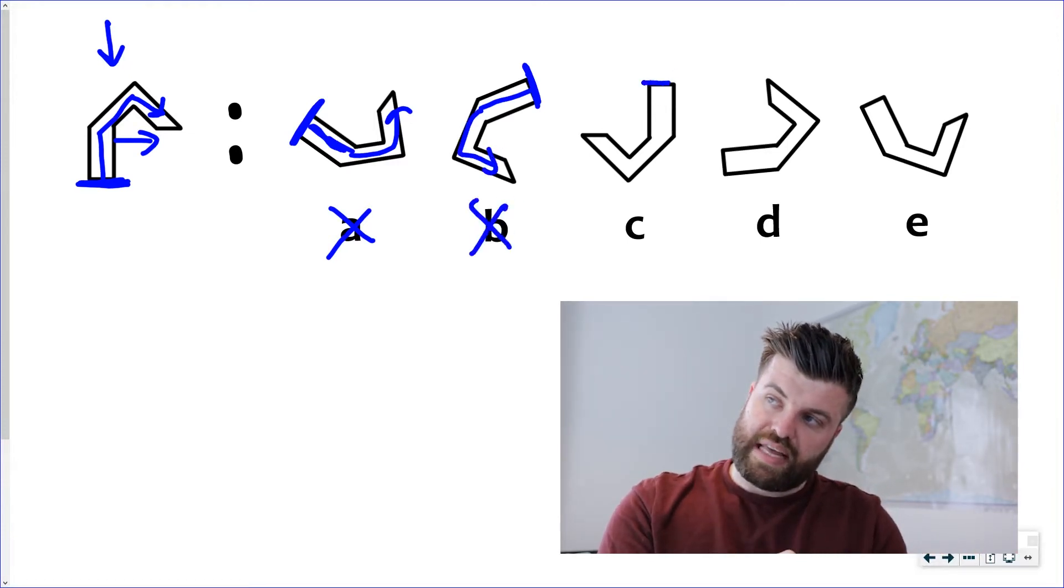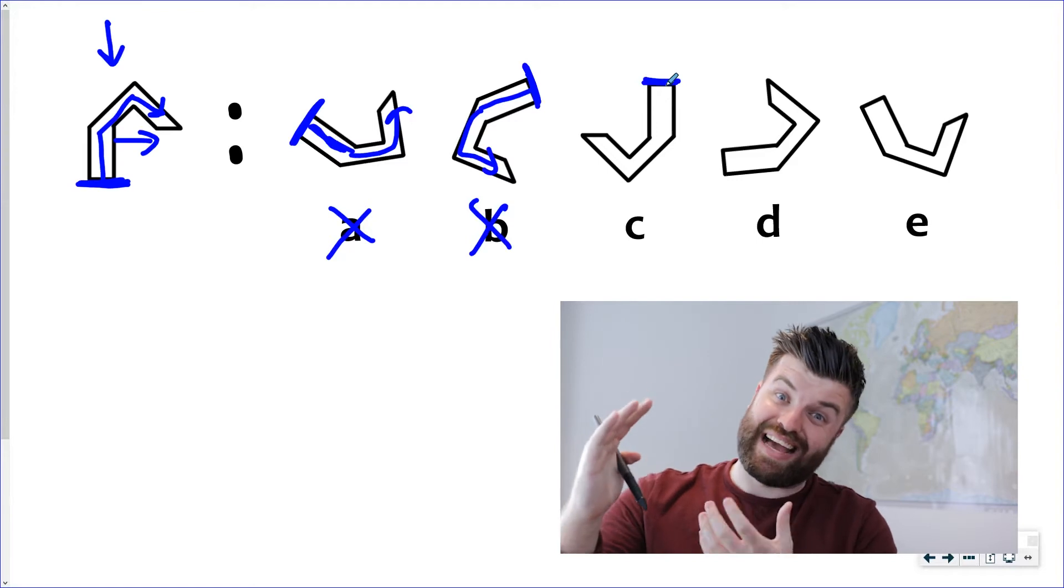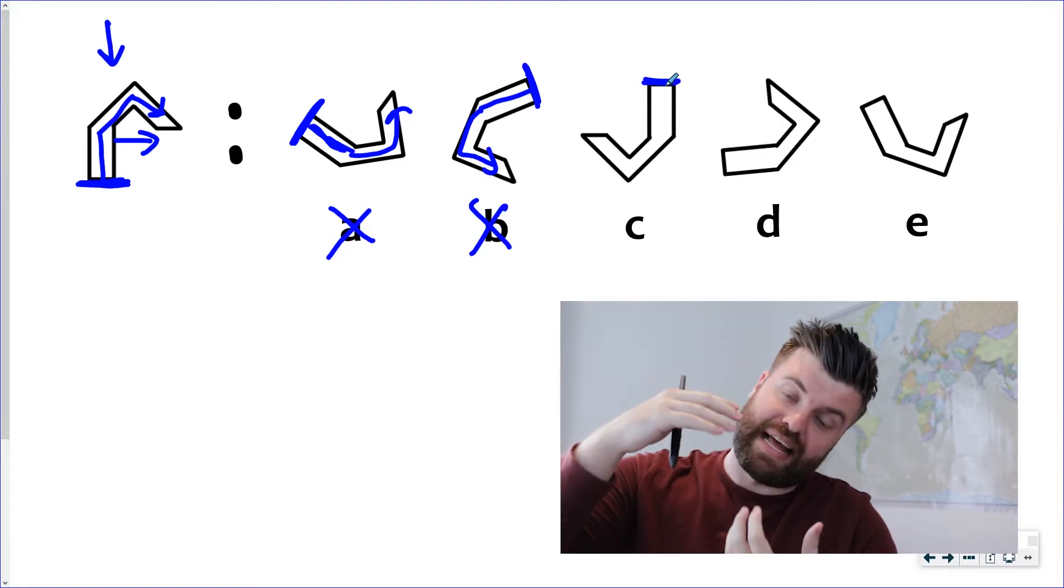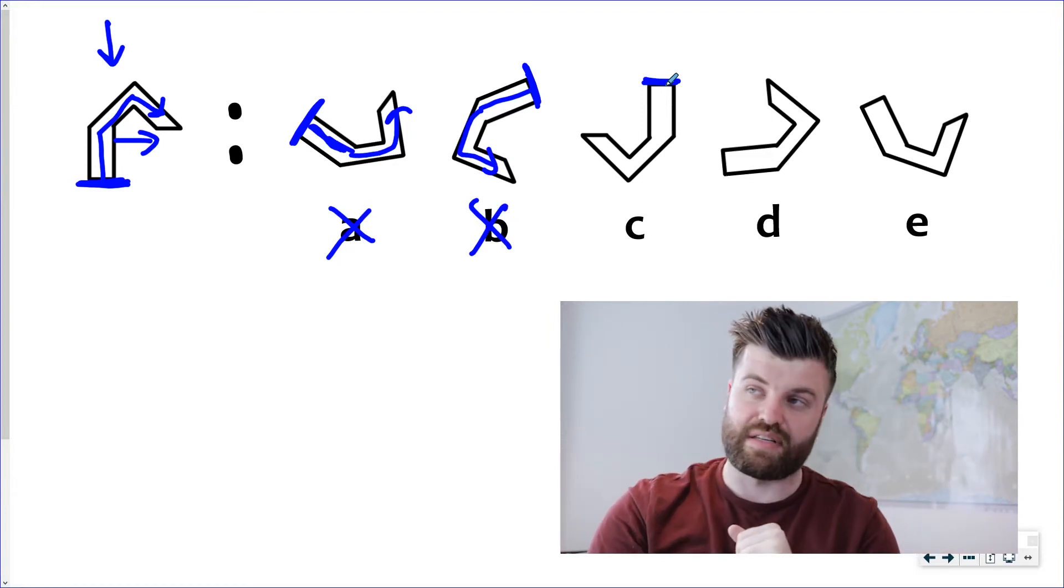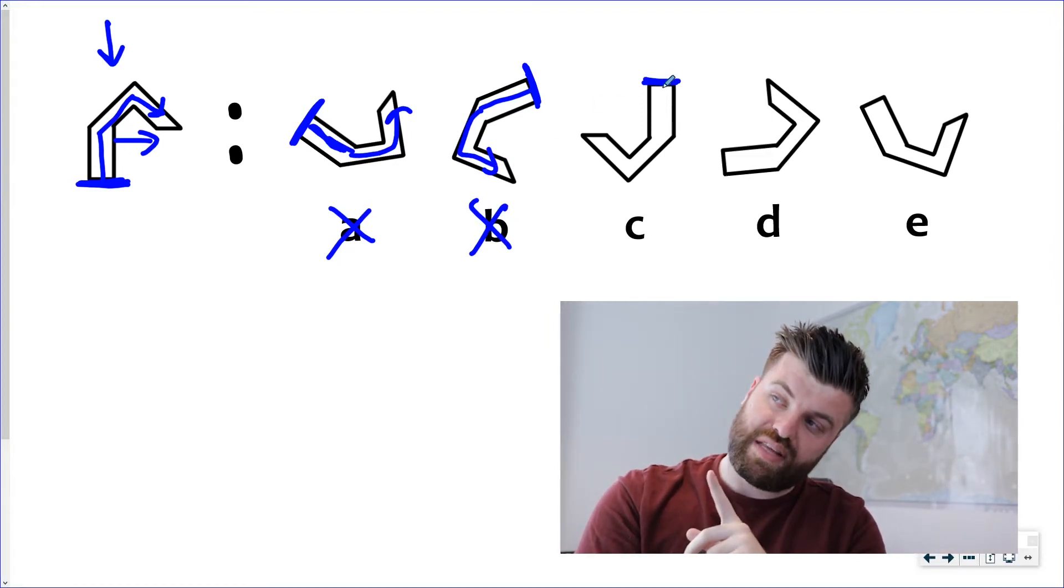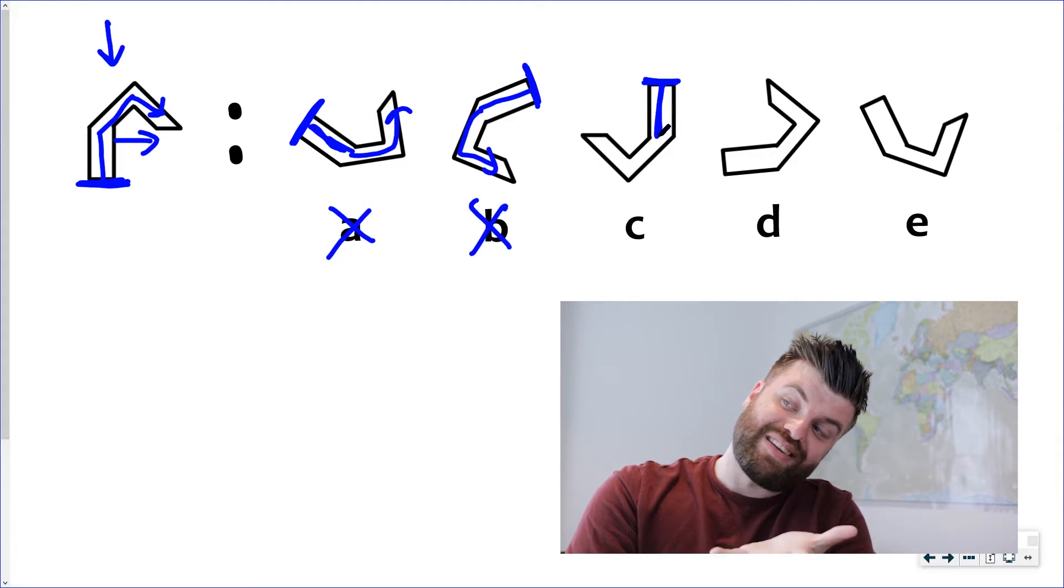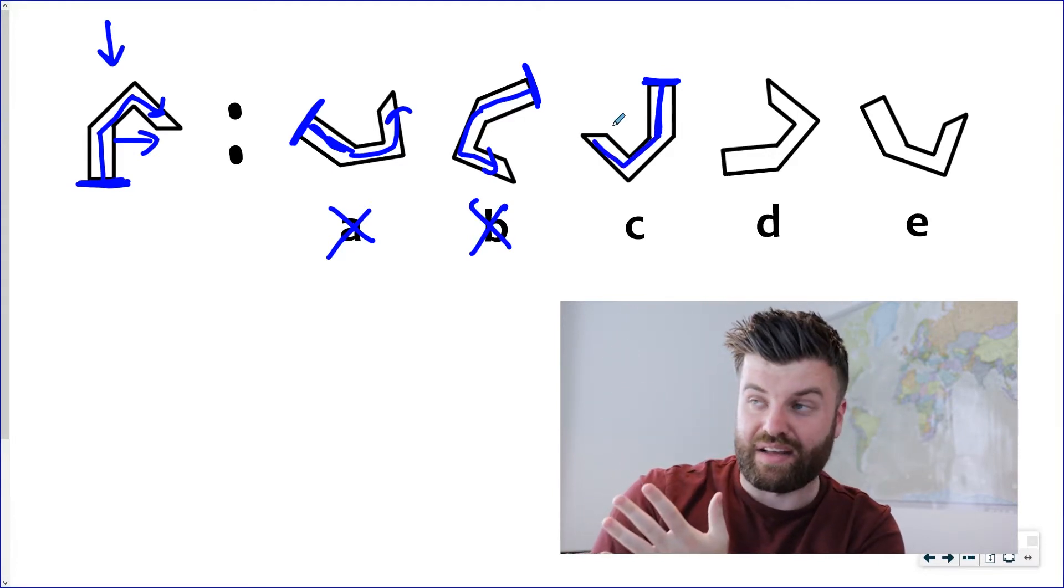Look at this one now in the middle C. Now this one's upside down so you'd have the paper and you'd shove it right around just like that to make it really easy for yourself. But what you should notice with this shape the base actually does go to the right for the overhang. So C is the answer.